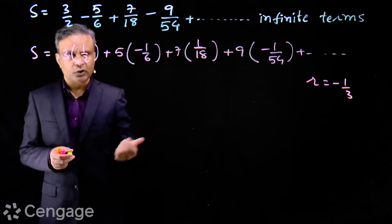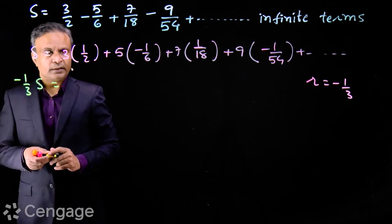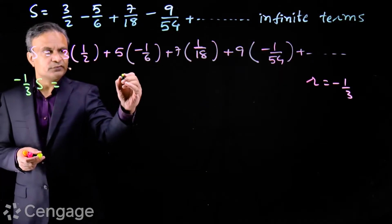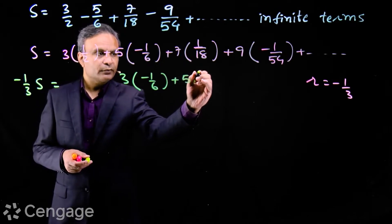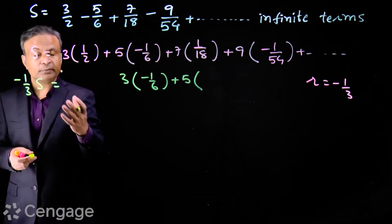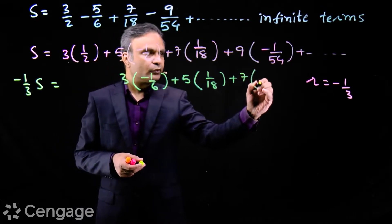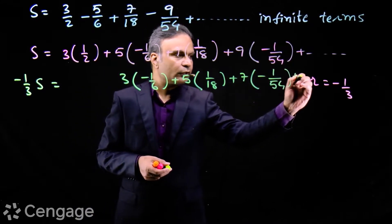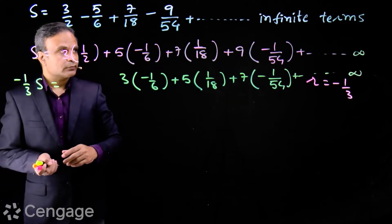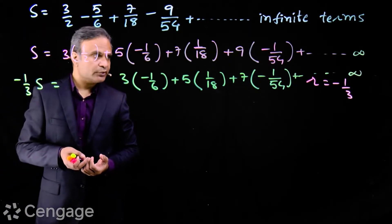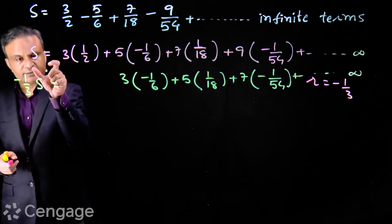We multiply this series by the common ratio, which is -1/3. So (-1/3)S equals the series shifted by one unit. Below this, 3 × (1/2) × (-1/3) gives -1/6, plus 5 × (-1/6) × (-1/3) gives 1/18, then 7 × (-1/54) and so on. We have a converging series since the common ratio r lies between -1 and 1. Now we subtract this result from the original.